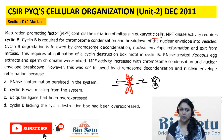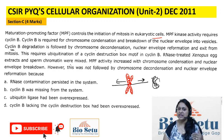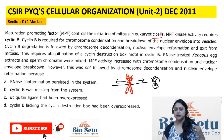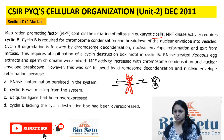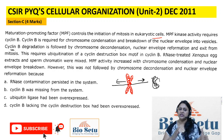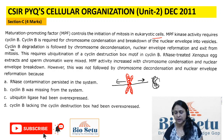This requires ubiquitination of a cyclin destruction box motif in Cyclin B. In Cyclin B there is a specific motif which allows destruction of Cyclin B through ubiquitination — proteasomal degradation of Cyclin B. At that specific destruction box, unless and until Cyclin B is destroyed, there is no chromosome decondensation, nuclear envelope re-formation, or end of mitosis.